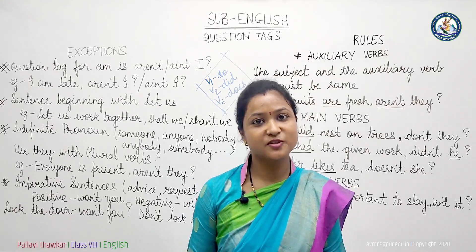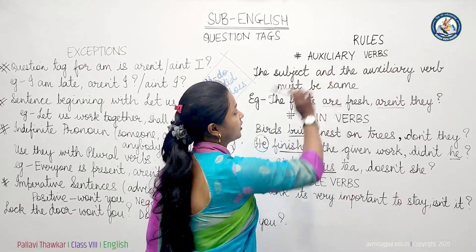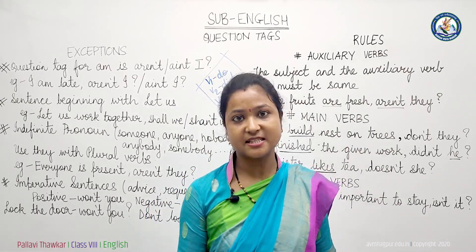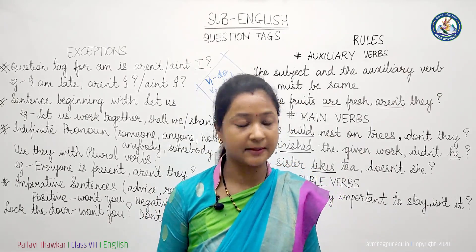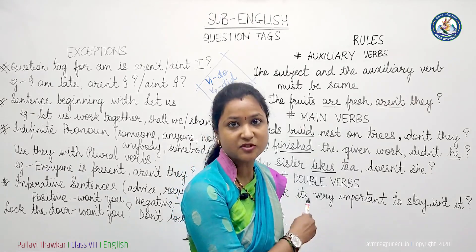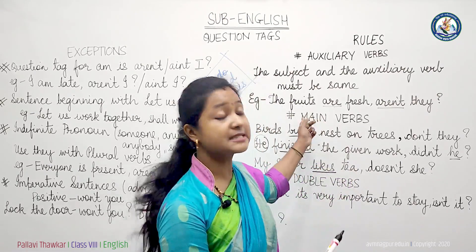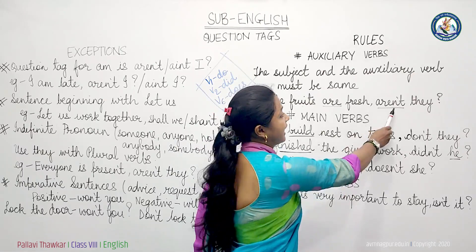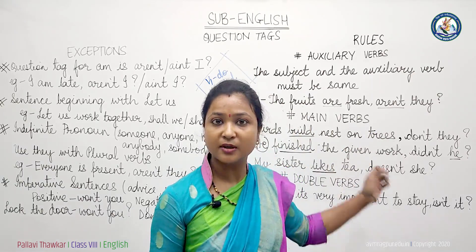Now let us proceed towards the rules of formation of question tags. The first rule: if we have an auxiliary verb present in the statement, we will directly use that auxiliary verb in the question tag. For example, 'The fruits are fresh' — the subject is 'the fruits' and 'are' is the auxiliary verb. Since the statement is positive, I will use a negative question tag, and since fruits are more than one, I use 'they' — so, 'aren't they?'